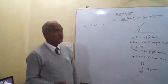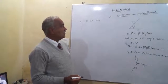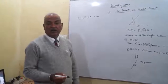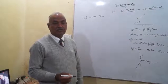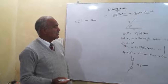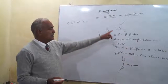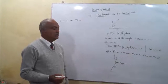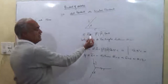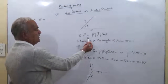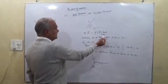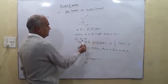My dear students, today our topic is product of vectors. First is the dot product, also called the scalar product. If A vector and B vector are two given vectors, and theta is the angle between A and B, then A dot B is equal to the magnitude of A, magnitude of B, and cos of theta.